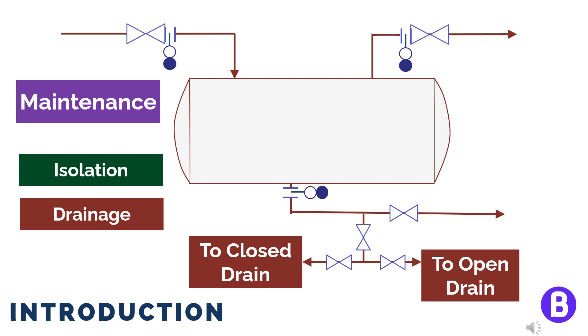We also need a purge connection to prepare the vessel and make sure its atmosphere is ready for the operator entrance. This is usually done through purging the vessel with steam or nitrogen, then with air. All this data should be shown on the P&ID.